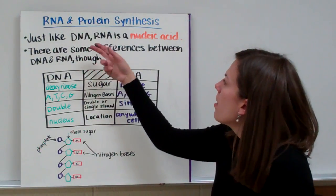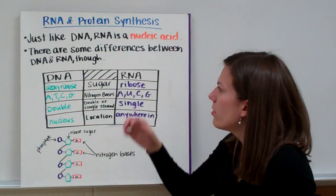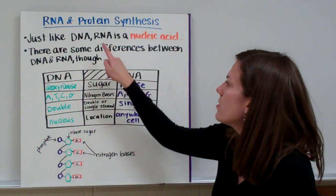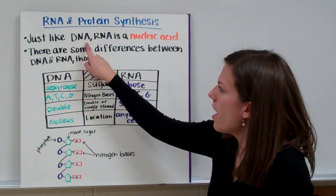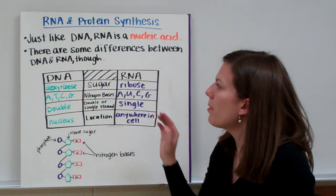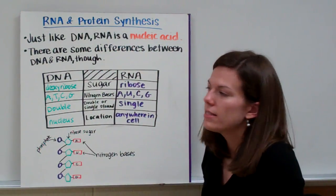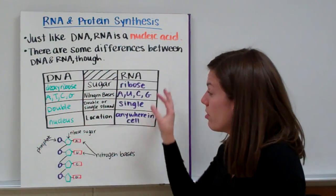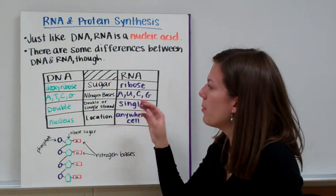Just like DNA, RNA is a nucleic acid. DNA and RNA are both nucleic acids and you see that in their name. The NA in both DNA and RNA stands for nucleic acid. But there are some differences between DNA and RNA, and we're going to look at those differences in this table.